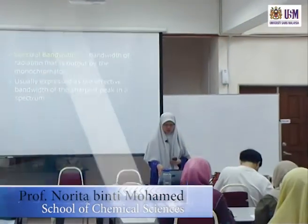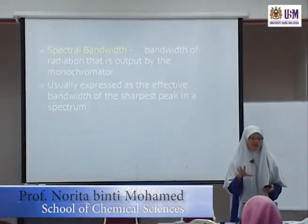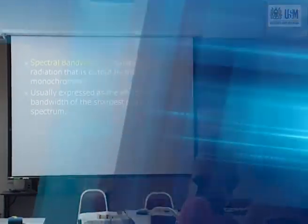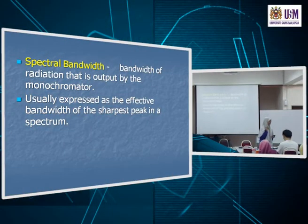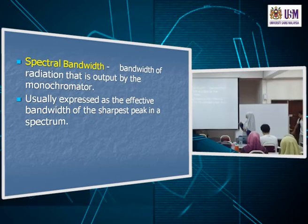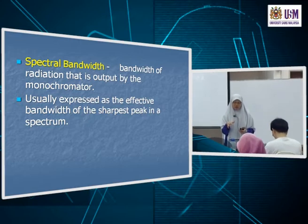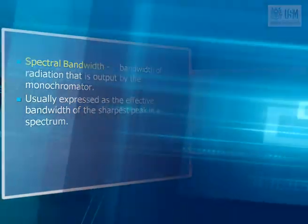What we last looked at was the performance of a monochromator, and this is the last aspect — the quality of radiation that comes out. One of the things we are going to talk about is spectral bandwidth: the bandwidth of radiation that is output by the monochromator.